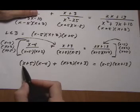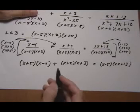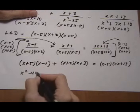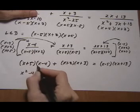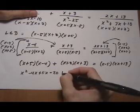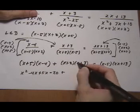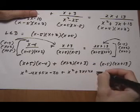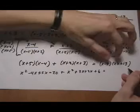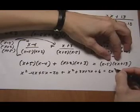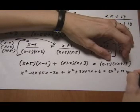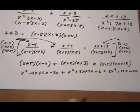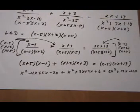Next step is going to be to distribute and then combine like terms. So first distributing, you get x squared minus 4x plus 5x minus 20 plus, bringing down that plus sign, x squared plus 3x plus 2x plus 6 equals 2x squared plus 13x minus 10x minus 13 times 5 which is 65.